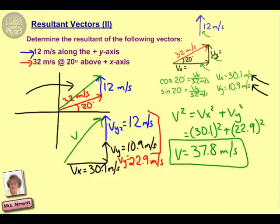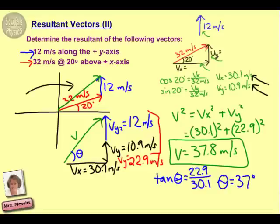Now one thing to keep in mind is that unfortunately we are not quite done here. Because we also need to include the angle. Anytime you are dealing with a vector, your answer is not complete without an angle. And in this case, probably the easiest is to go back to tangent. Tangent is equal to opposite over adjacent. Our opposite side was 22.9. Our adjacent side is 30.1. And solving for the angle, we get an answer of 37 degrees. And that is above the positive x-axis.